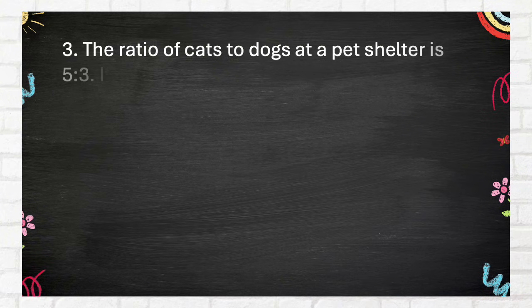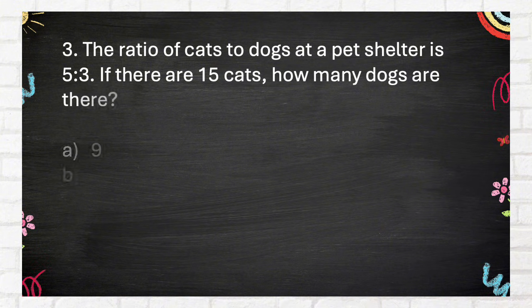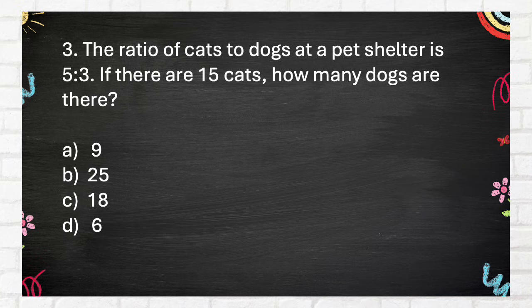Number 3. The ratio of cats to dogs at a pet shelter is 5 to 3. If there are fifteen cats, how many dogs are there? A. Nine. B. Twenty-five. C. Eighteen. D. Six.